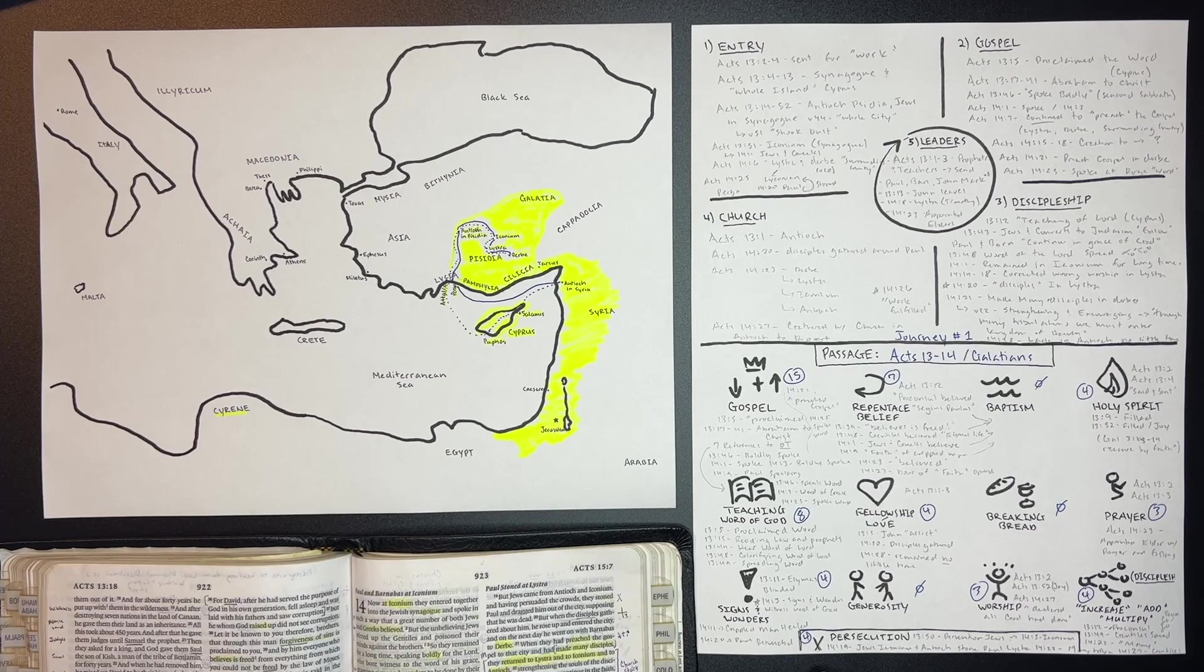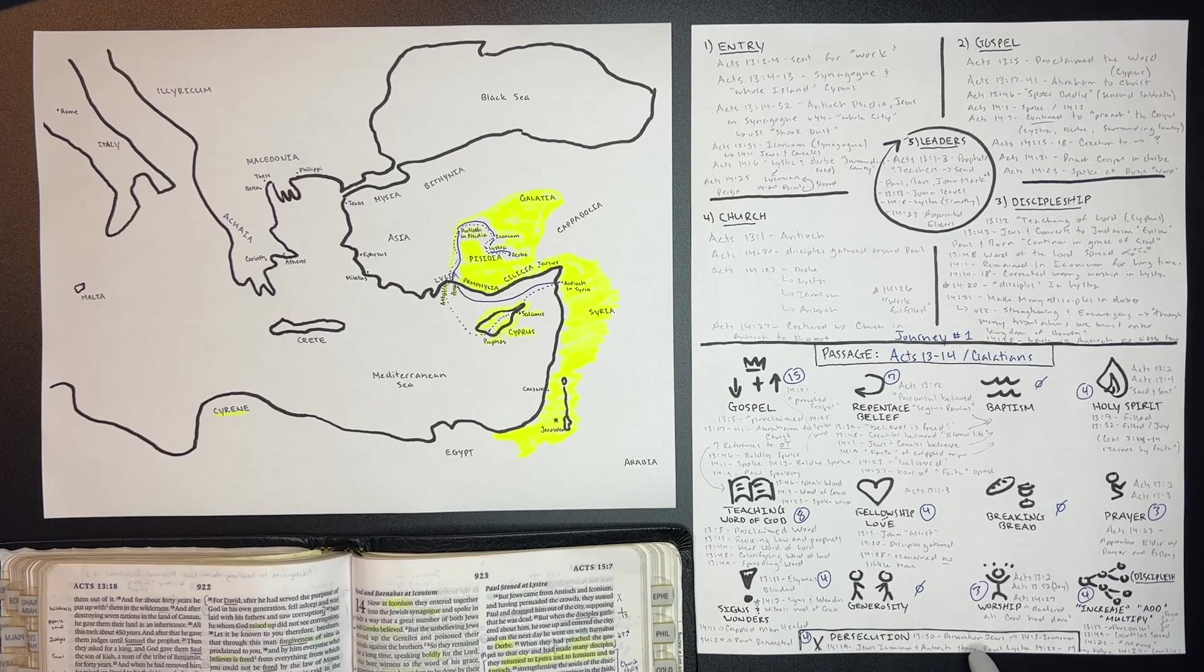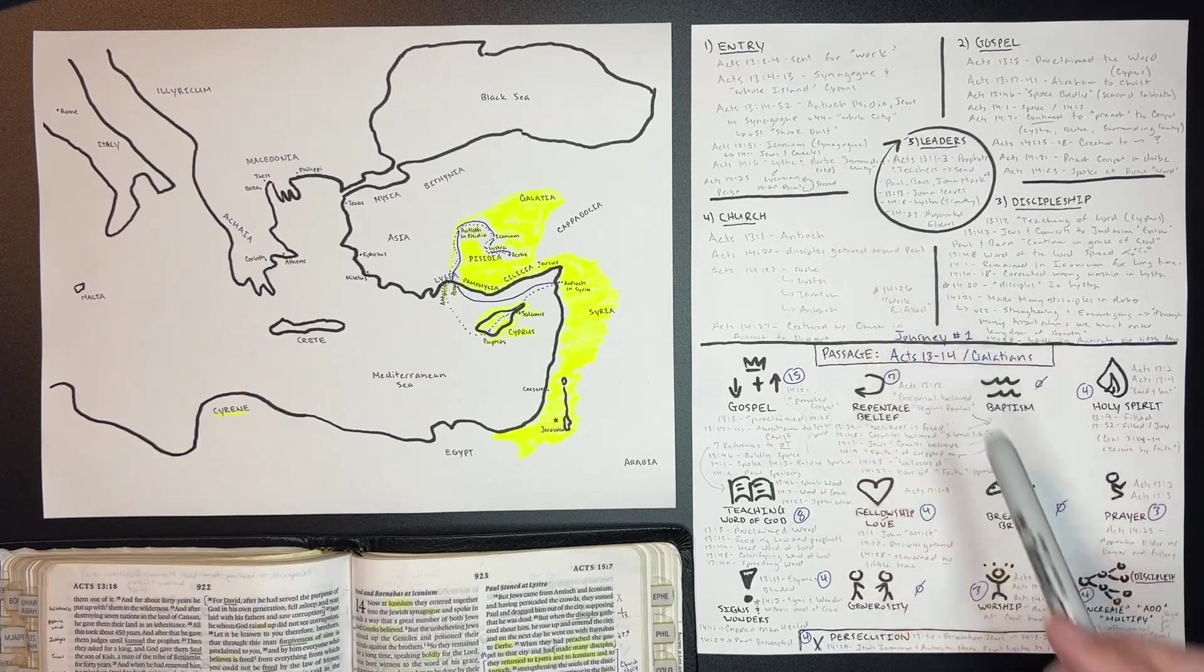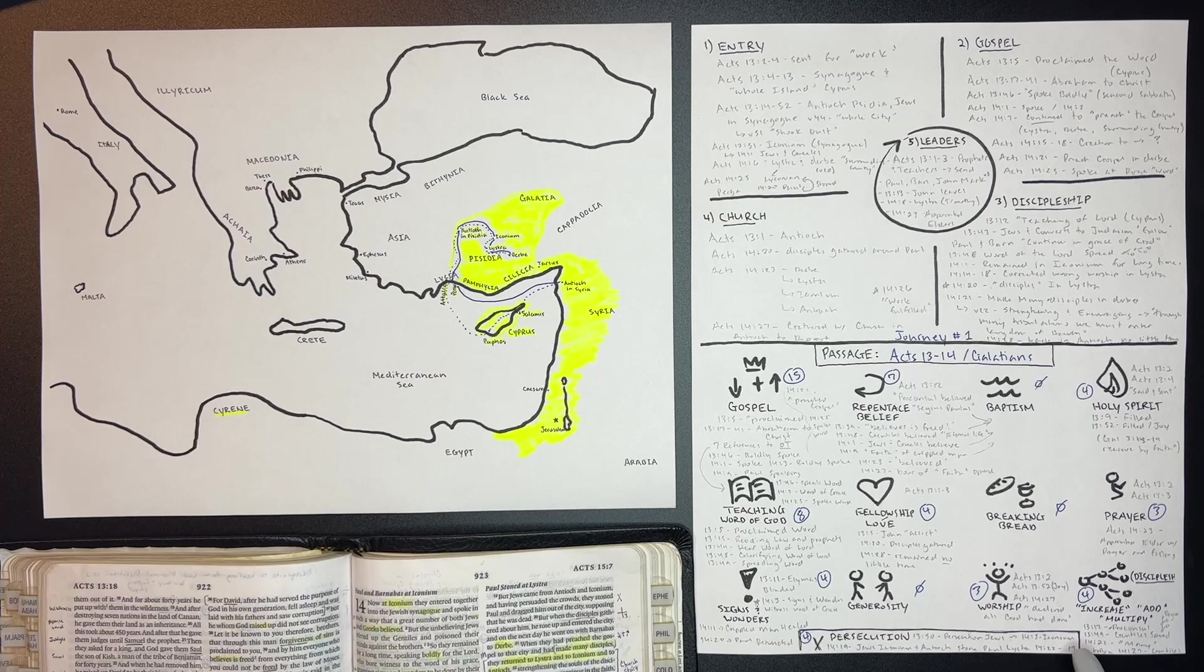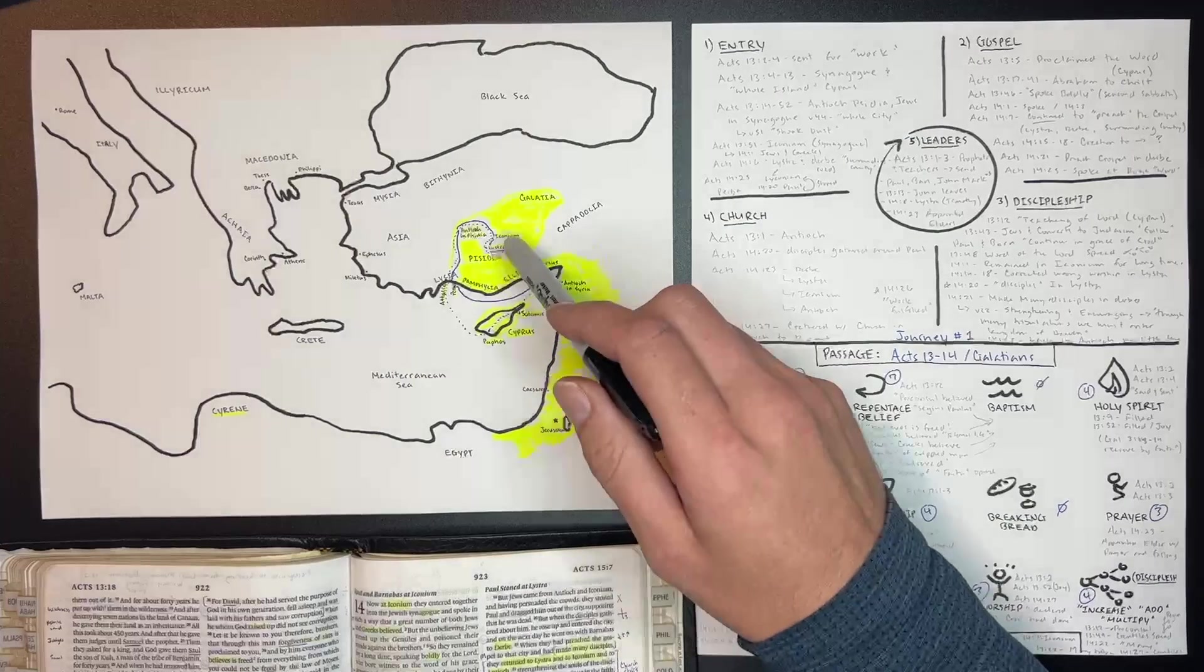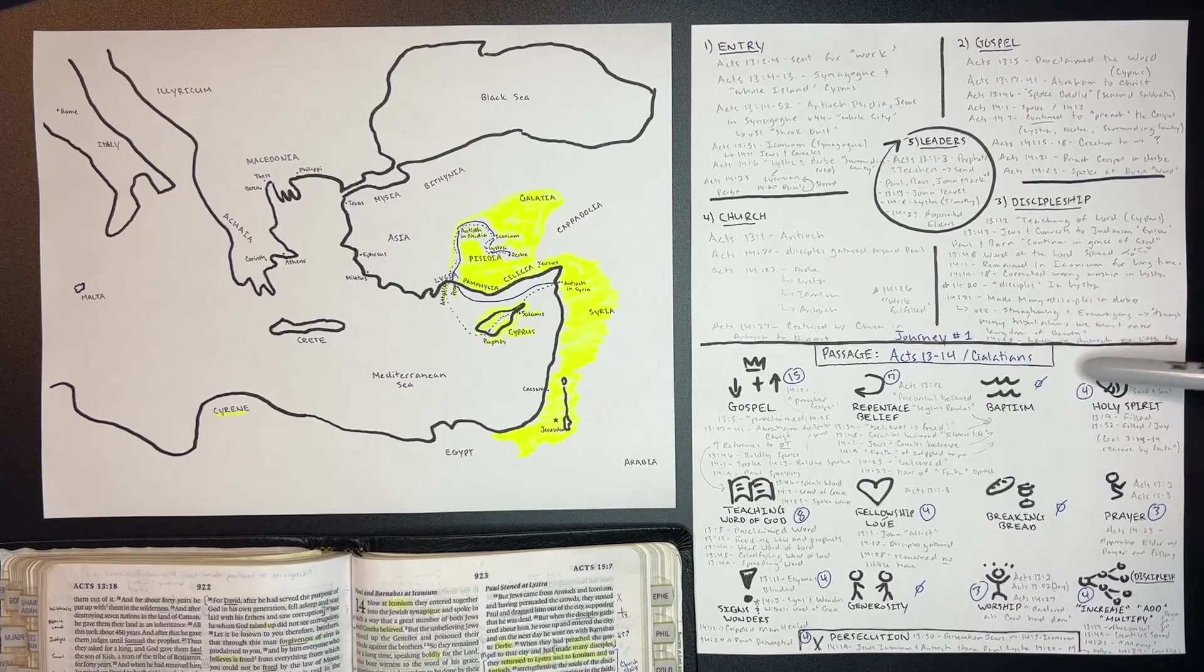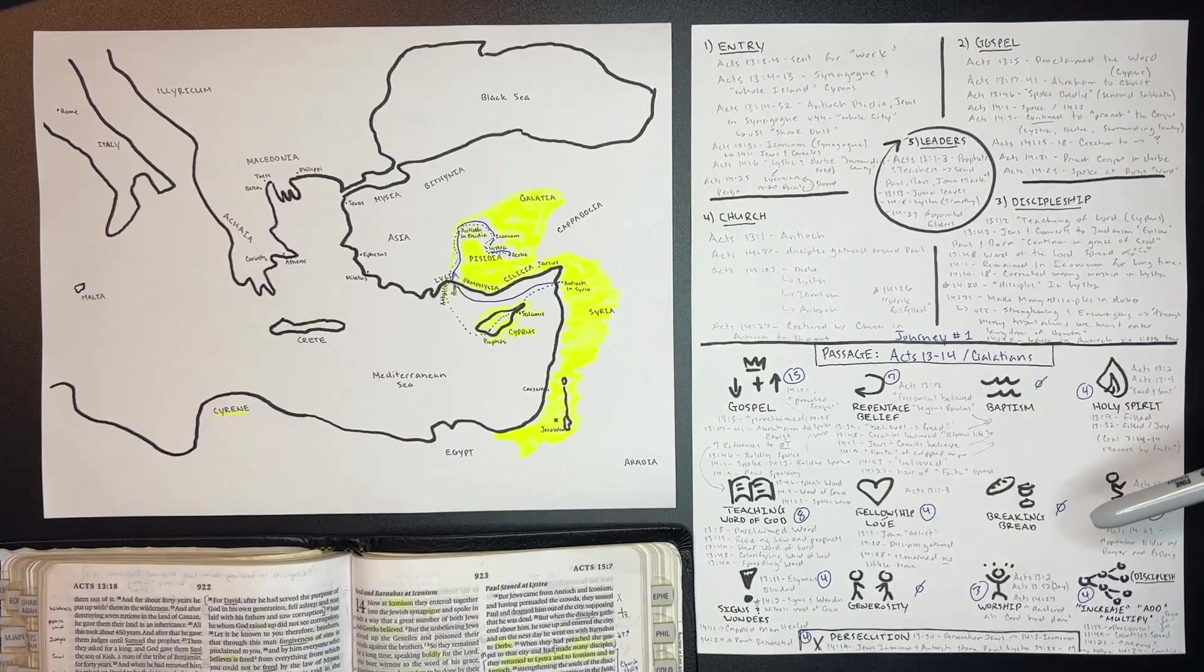Four times there was persecution in these chapters, and what's interesting is it begins to ramp up. First, they're harassed in Antioch, and so they shake the dust from their feet, which is a part of what Jesus commanded them to do in Luke 10. He said, if they don't receive you, shake the dust from your feet and go to the next town. In Iconium, they are threatened and they leave before this threat can be carried out. In 14:19, the Jews from both Iconium and Antioch-Pisidia come all the way down to Lystra and they stone Paul. And in 14:22, we see that this persecution was a part of Paul's teaching for new believers. He said, through many tribulations, we should enter the kingdom of heaven.